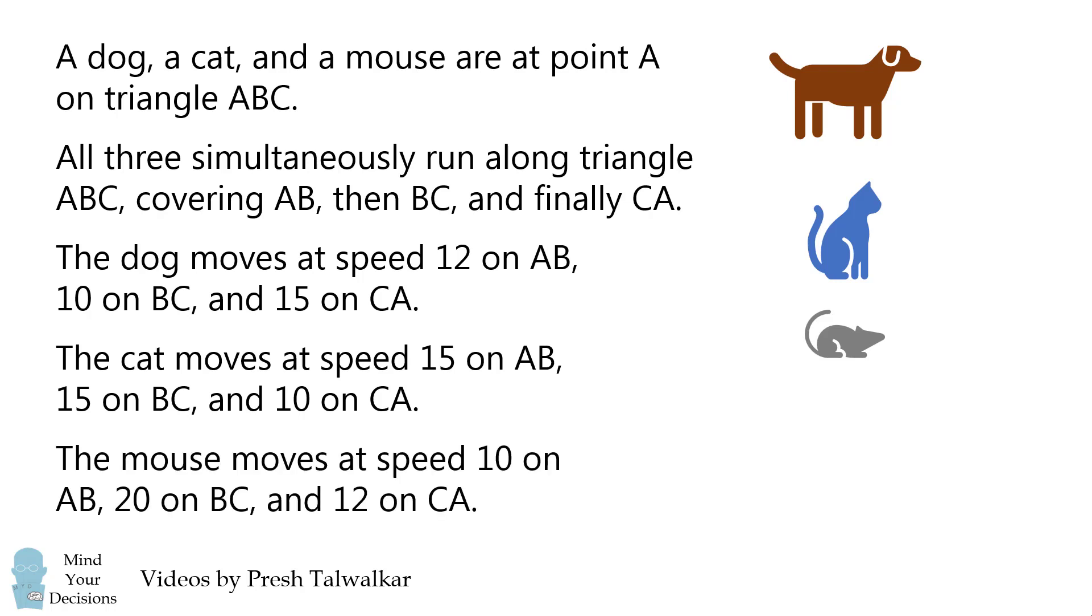The mouse moves at speed 10 on AB, 20 on BC, and 12 on CA.